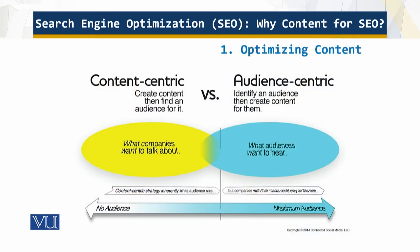There are two types of content we are talking about. We have the content-centric approach — this is content created to find an audience, what the companies want to talk about. This is one extreme. The other is the audience-centric approach: identify an audience and create what the audience wants to hear. So we have max audience on one side and no audience on the other.